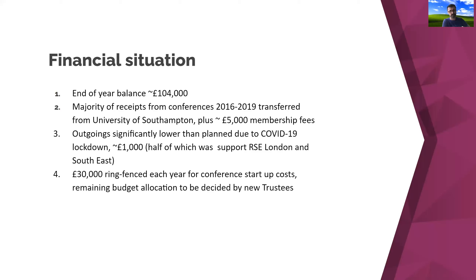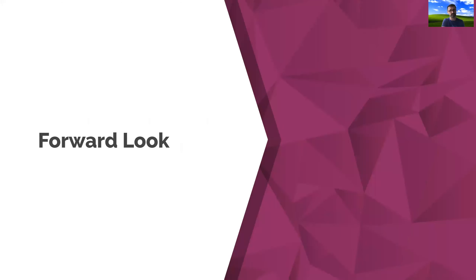About half of the £1,000 outgoings was used to support the RSE London and South East regional get-together. Obviously this is not what we want, but it's not far from normal times. Going forward, we're going to be looking at spending finances quite differently. Each year we've ring-fenced £30,000 as the float for the conference to ensure we have an RSE conference every year. The remaining budget will be allocated by the new trustees to various events and other activities.